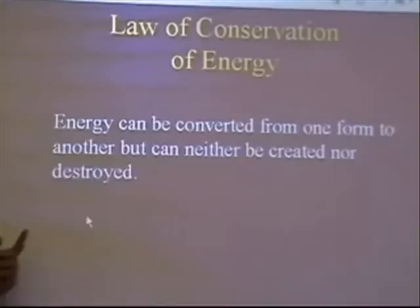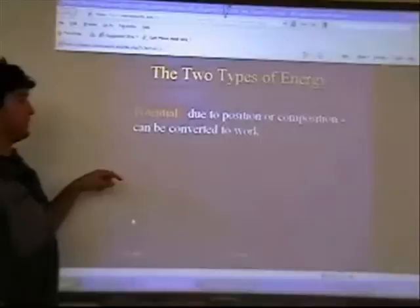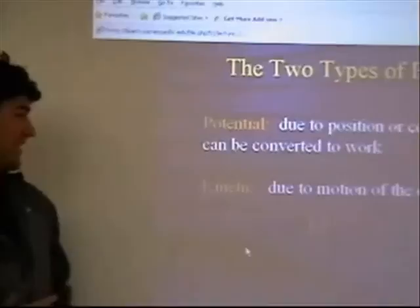There are two types of energy. Potential energy is due to position or composition and can be converted to work. Kinetic energy is due to the motion of the object. We're also mixing a little physics here. The formula for kinetic energy is KE equals one-half m times v squared, where m equals mass and v equals velocity.